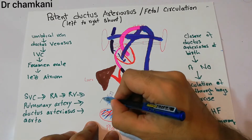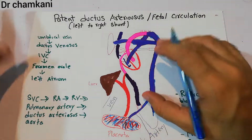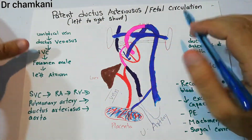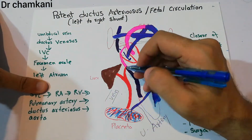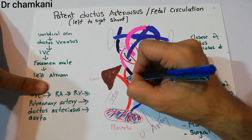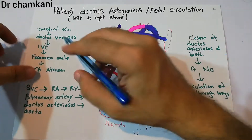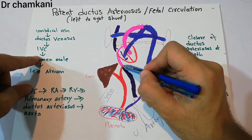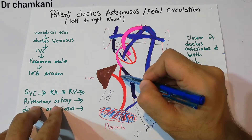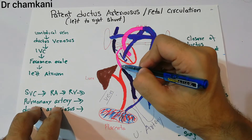The umbilical vein carries oxygenated blood — this is reversed from the normal convention, similar to the pulmonary vein. The oxygenated blood from the mother bypasses the liver through the ductus venosus and goes directly into the inferior vena cava. Here, the highly oxygenated blood mixes with deoxygenated blood from the body, and the saturation of the blood slightly decreases.